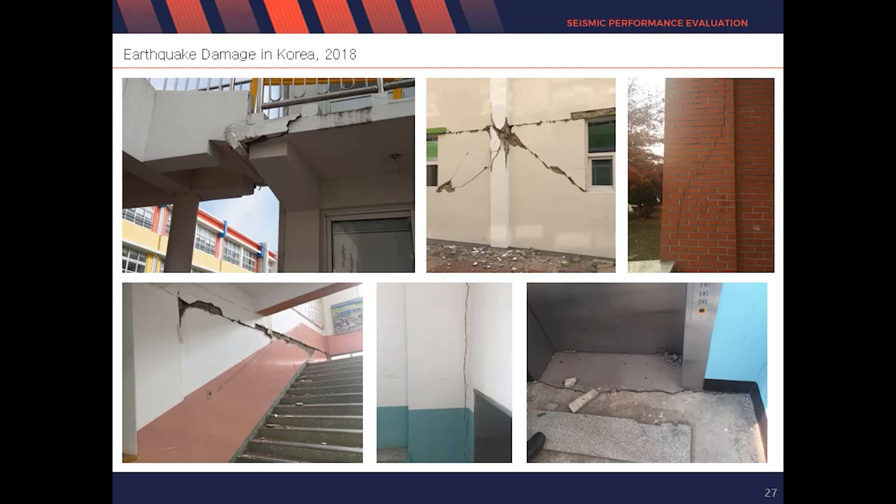If you look at the picture, you can check the most critical crack in the expansion joint, column, and masonry wall. Especially, diagonal crack or shear failure of the column is critical as it can cause the building to collapse.